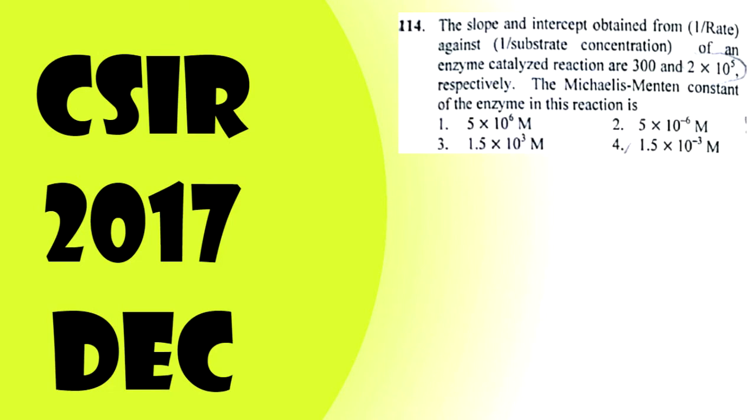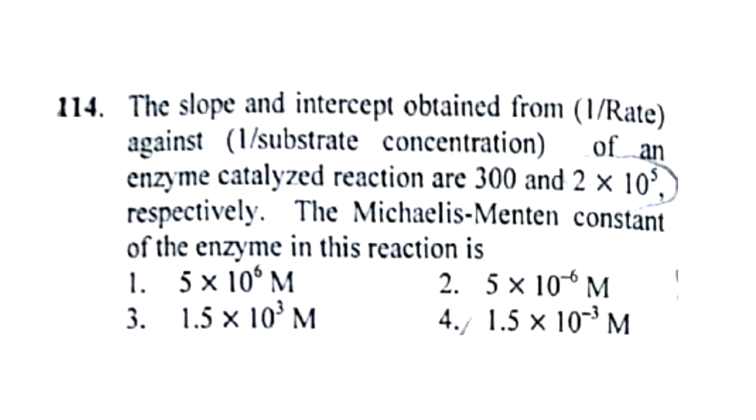Let us look at a question based on enzyme kinetics. The slope and intercept obtained from 1/rate against 1/substrate concentration of an enzyme catalyzed reaction are 300 and 2×10^5 respectively. The Michaelis-Menten constant of the enzyme in this reaction is—options are given.